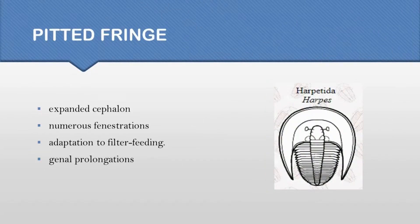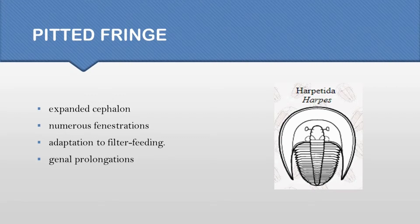Some trilobites evolved due to filter feeding. To feed themselves, they had to expand their cephalon or develop holes in the cephalon through which they could filter feed. To stabilize their body during filter feeding, genal spines or genal prolongations were notable, which later became important for species identification.